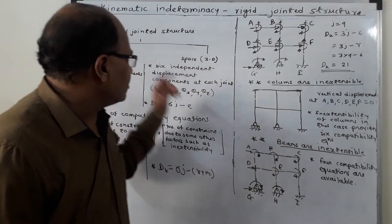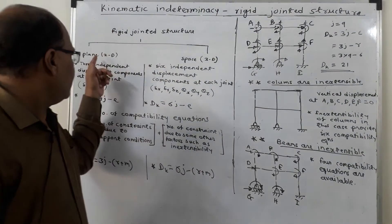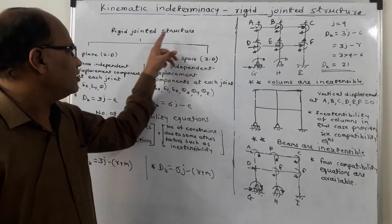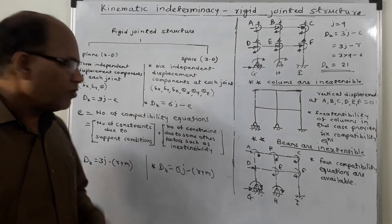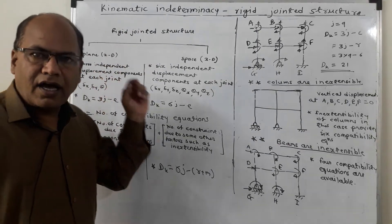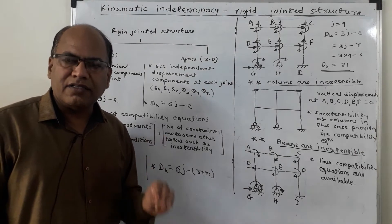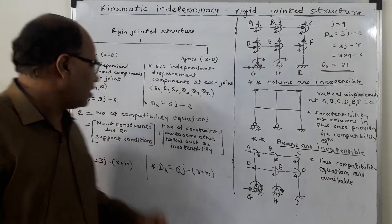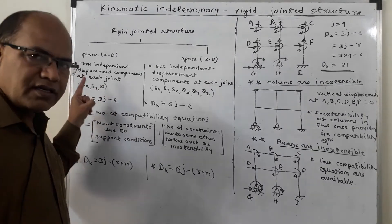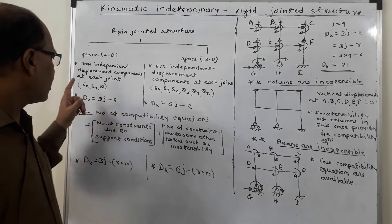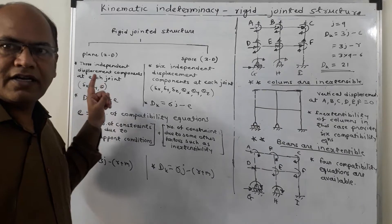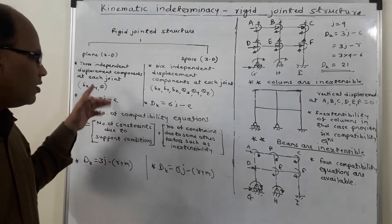Rigid jointed structures are classified into two types: plane, that is 2D rigid jointed structures, and space, that is 3D rigid jointed structures. In case of plane rigid jointed structures, each joint can have three independent displacement components — delta x, delta y, and theta. Delta x is the linear displacement component along the x-axis, delta y is the linear displacement component along the y-axis, and theta is the rotational component about the z-axis.